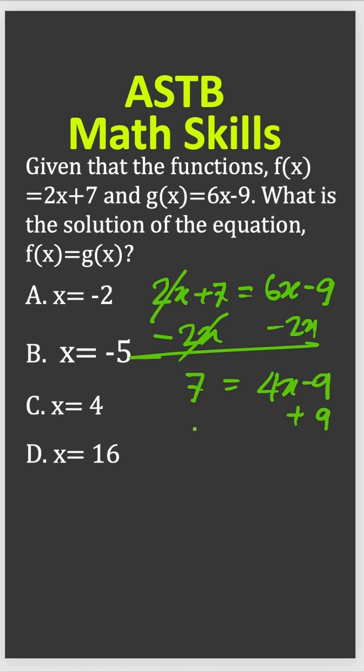Now add both sides by 9. I did it here, so 9 cancel out. So you have 9 + 7 is 16 = 4x.